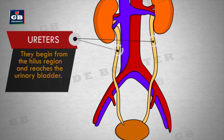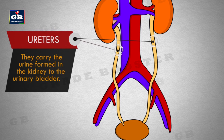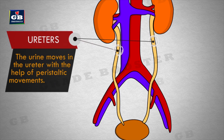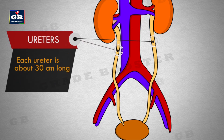Ureters begin from the hilus region and reach the urinary bladder. They carry the urine formed in the kidney to the urinary bladder. The urine moves in the ureter with the help of peristaltic movements. Each ureter is about 30 centimeters long.